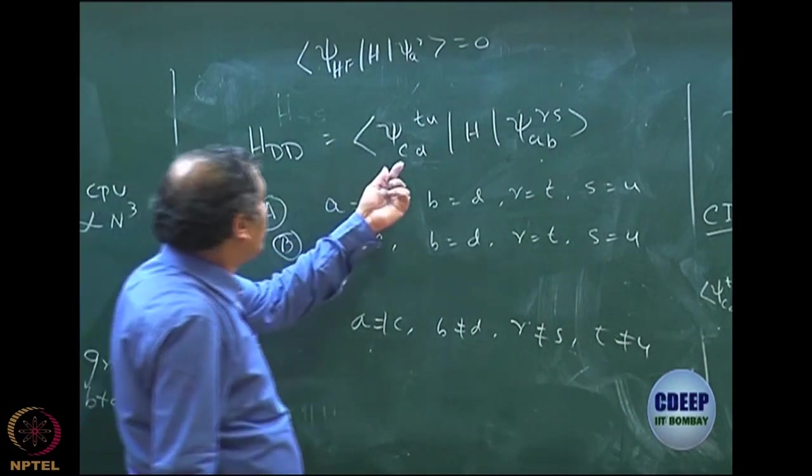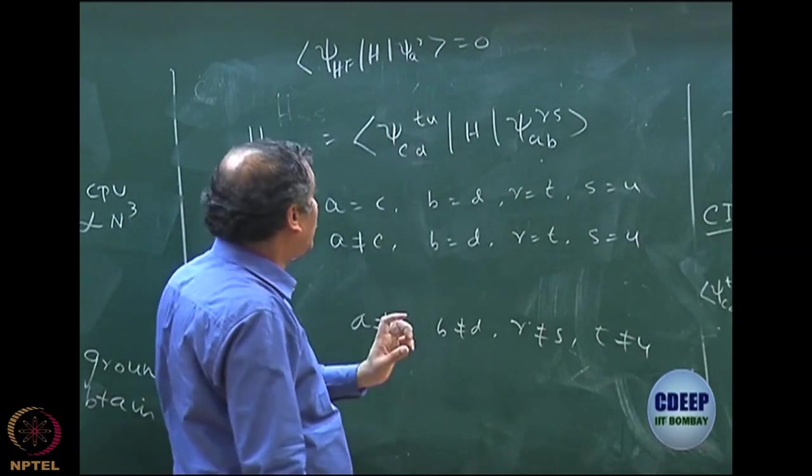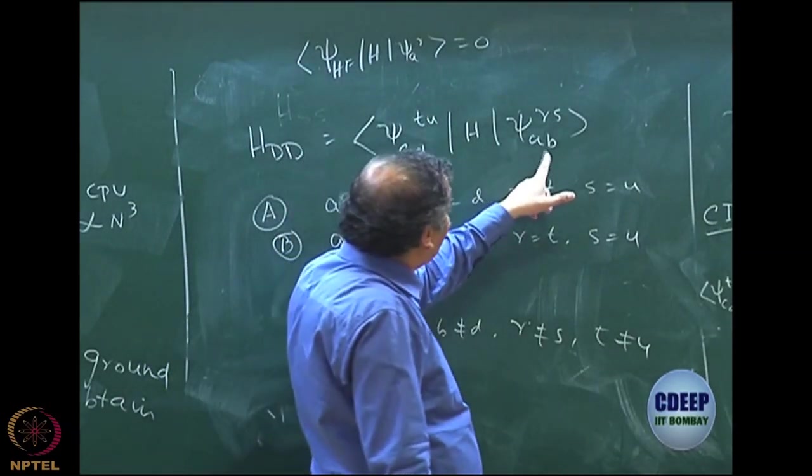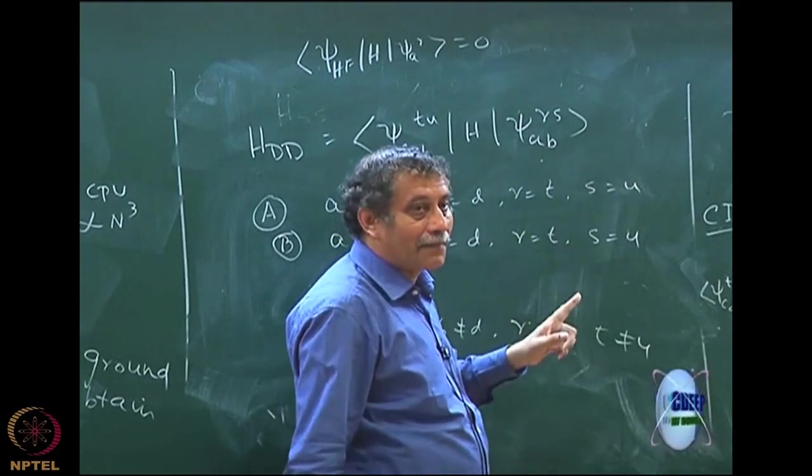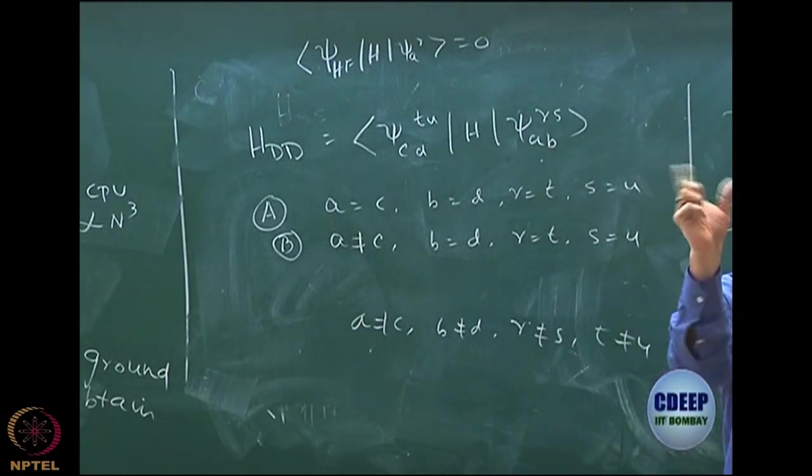The ones which are projected here, CDTU, they are different. Different places T and U have come. And the ones which are replaced here are also different, different places R and S have come. They can be, different places can be always interchanged, there is a negative sign, that is not a problem, where it goes.